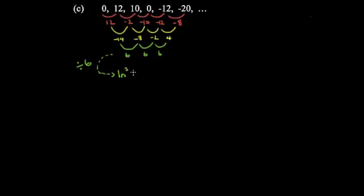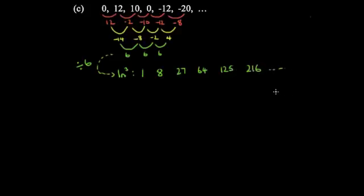We work out the n cubed sequence — that's 1, 8, 27, 64, 125, 216, and so on. Now what we have to do is inspect this: what do we have to do to this green line (n cubed) to get the white line?